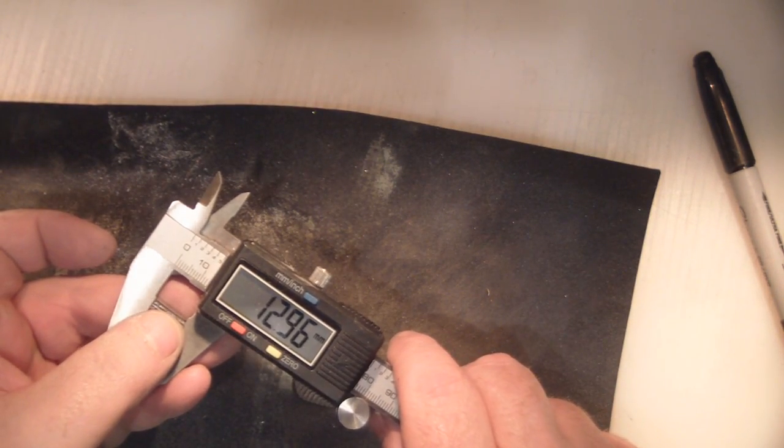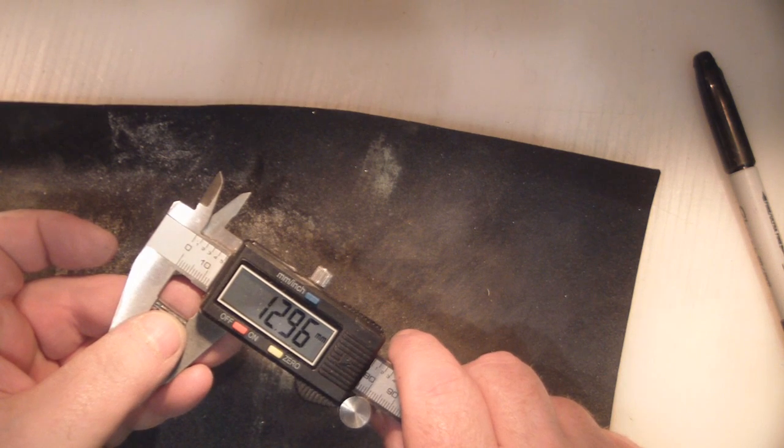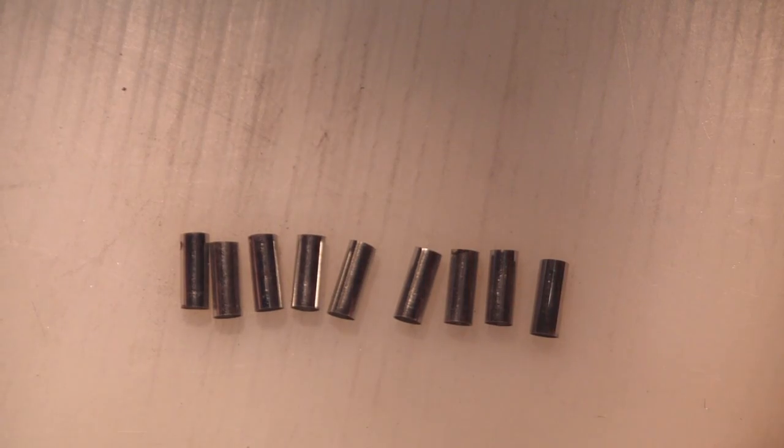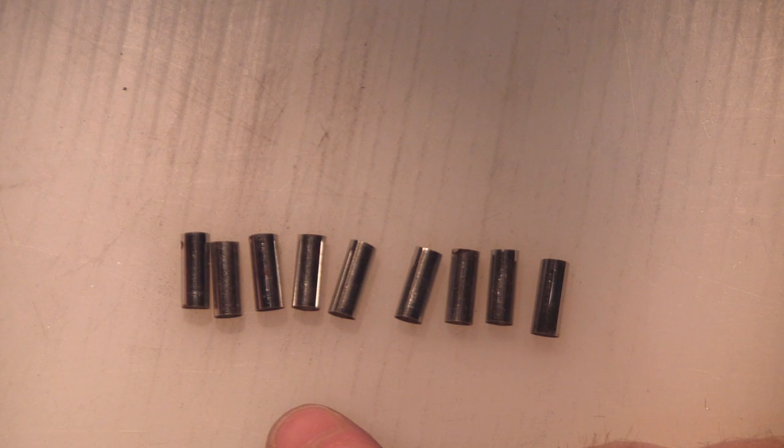So you just keep doing it until you get it as close as you possibly can. Just to give you an idea, it's taken me about 20 minutes of cutting and sanding to get these nine completed. So it doesn't take that long at all, you've just got to really take your time and just keep measuring it every time you give it a little sand.